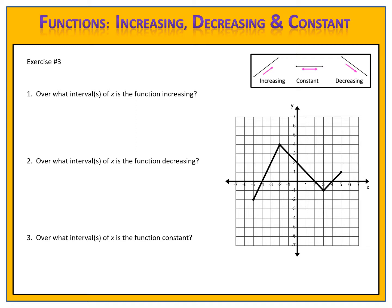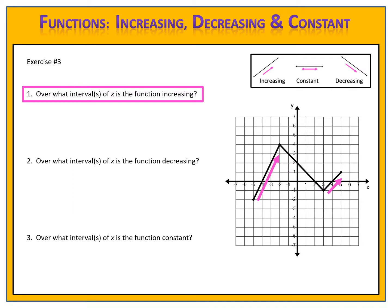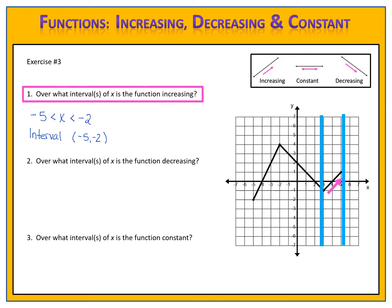We follow the same process as before. Put your finger on the graph on the left and follow it from left to right. In the beginning the function increases, then it changes to decreasing, and then changes back to increasing. The first problem: over what intervals of x is the function increasing? There are two sections. Using blue lines on the x-axis, the function is increasing from negative 5 to negative 2, written as −5 < x < −2 or interval notation (−5, −2). The second section is from 3 to 5, written as 3 < x < 5 or (3, 5).